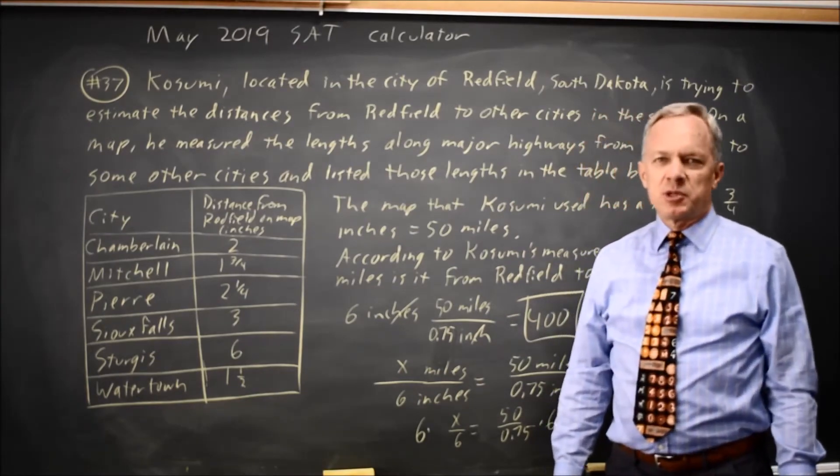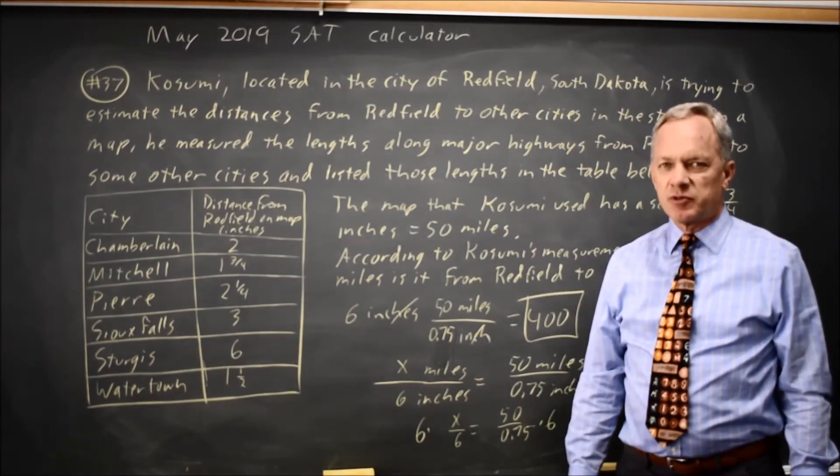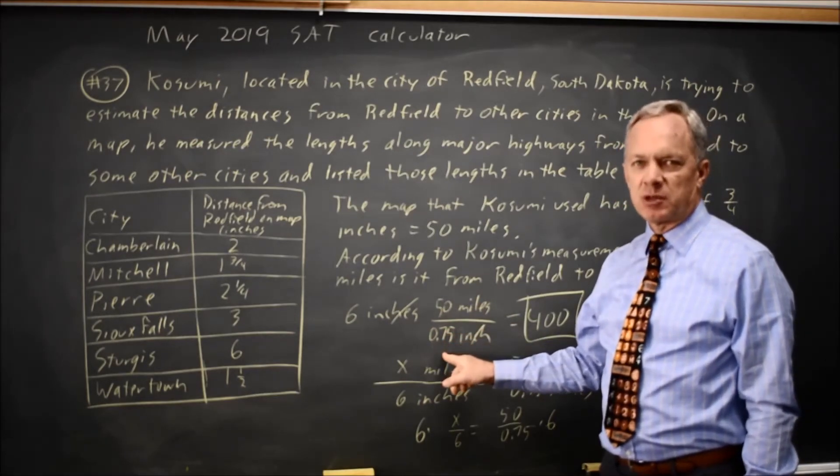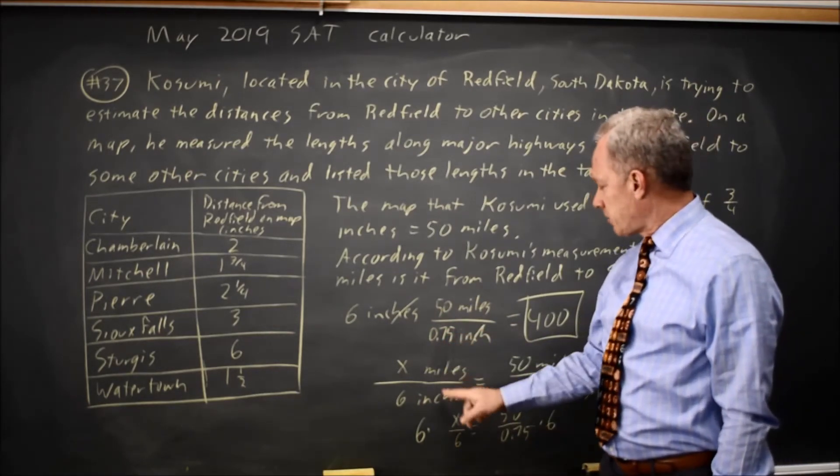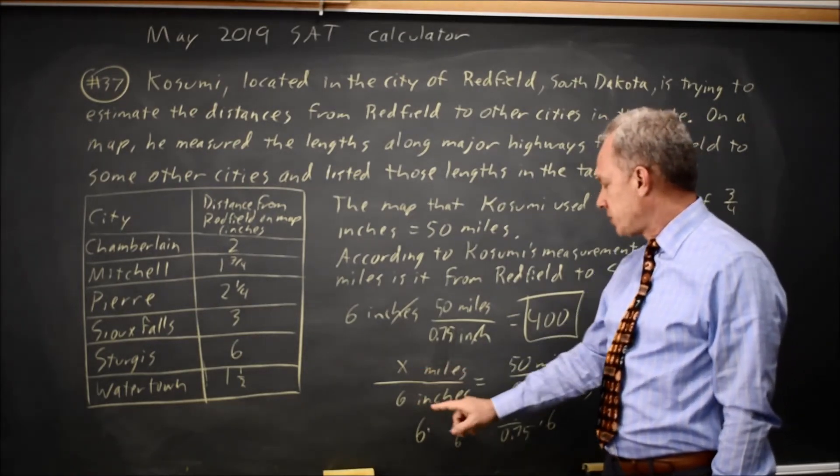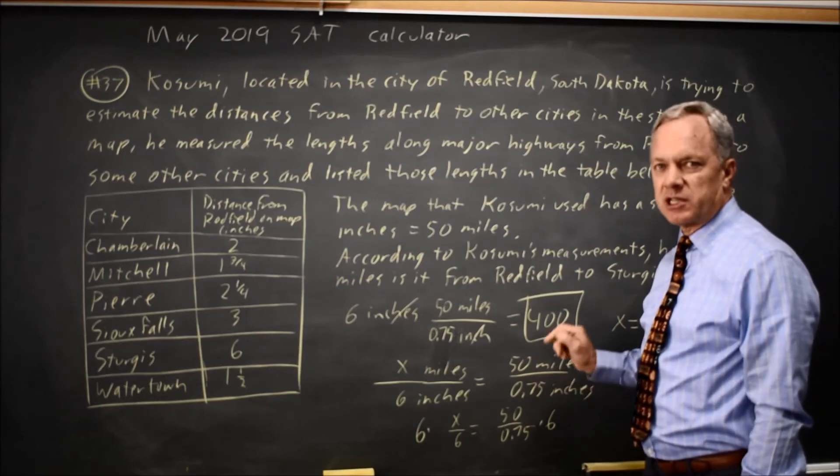Those are really the same computation, just different ways of looking at it. I like multiplying by expressions that I know in the context of the problem are equal to 1. I also like setting up a proportion. When I set up the proportion, I make sure that if I have miles over inches on the left, I also have miles over inches on the right.